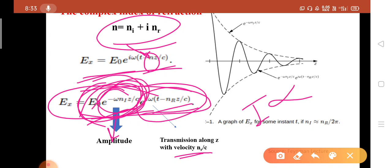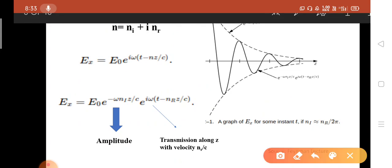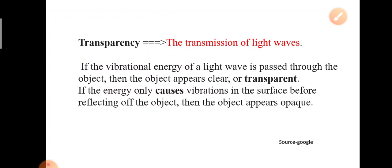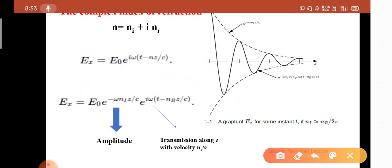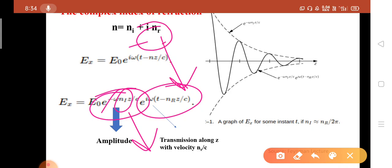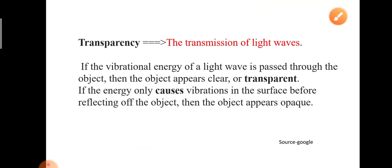The intensity is proportional to exp(−2ω·n_i·z/c), showing that the electric field exponentially decreases. The imaginary part of the refractive index n_i indicates absorption inside the material, while the real part n_r governs transmission of the electromagnetic wave. Therefore, transparency is decided by the real part of the refractive index.